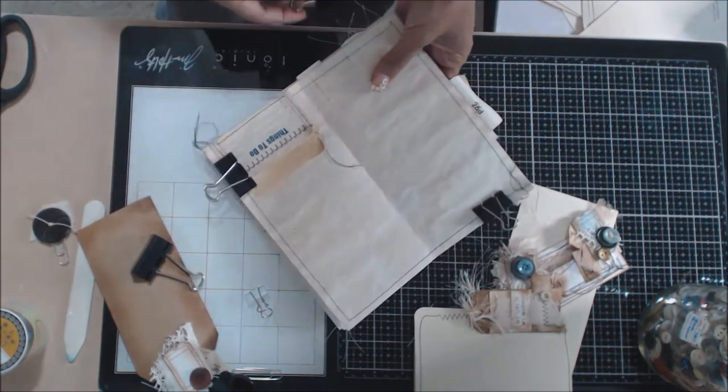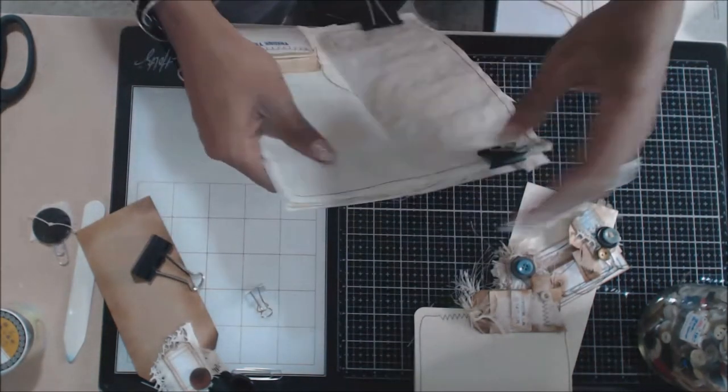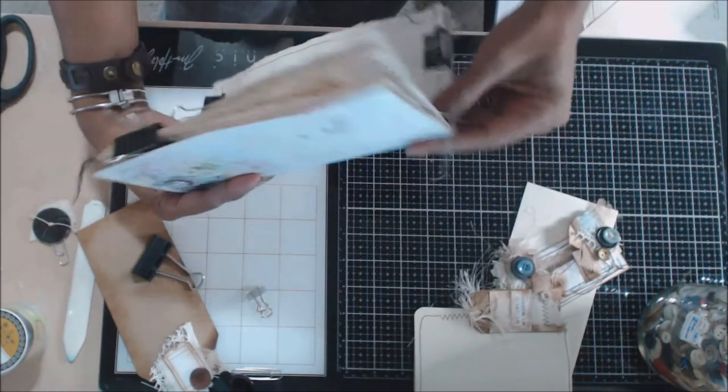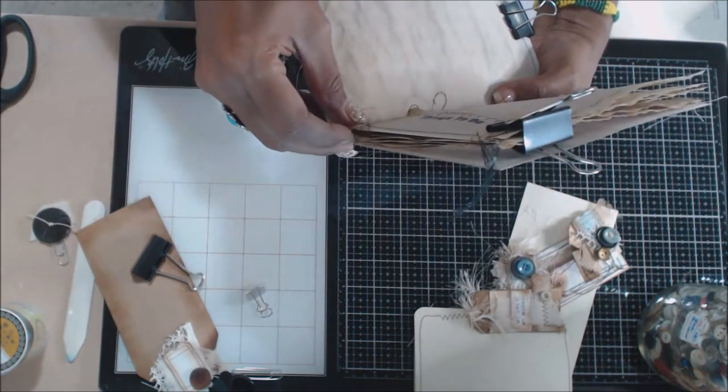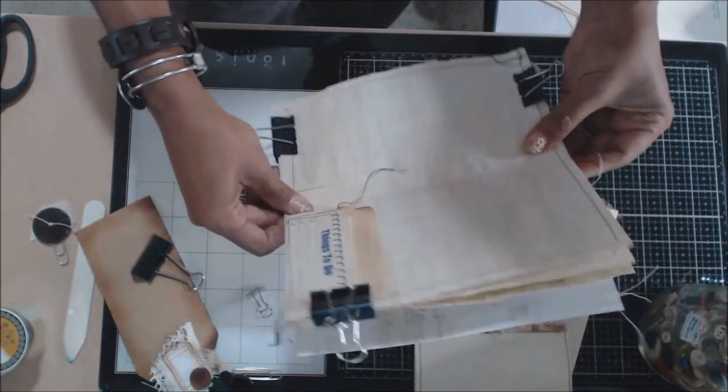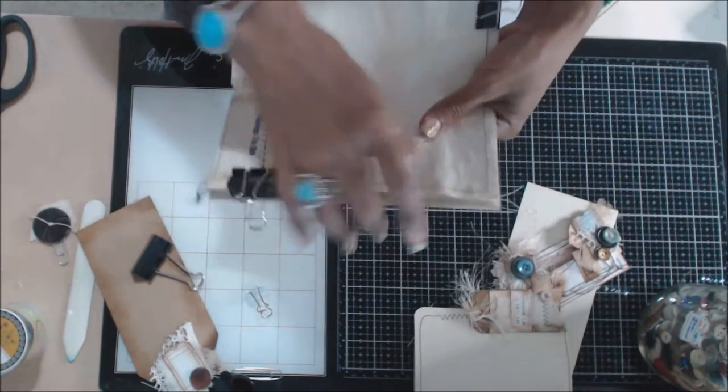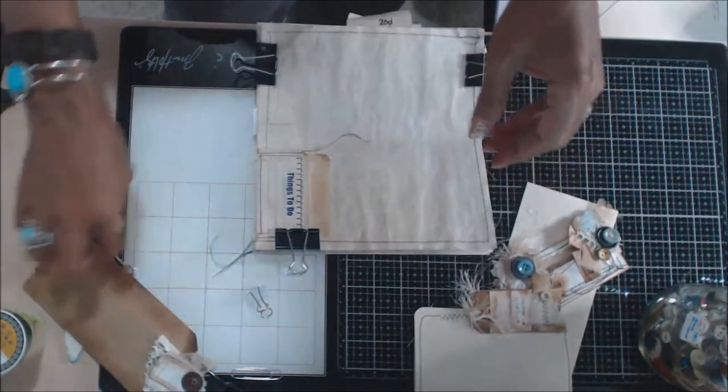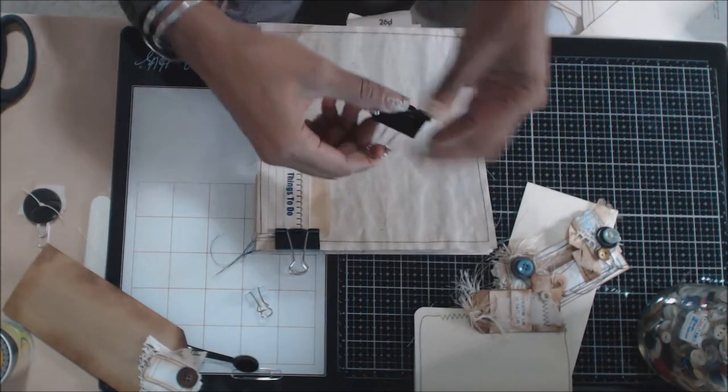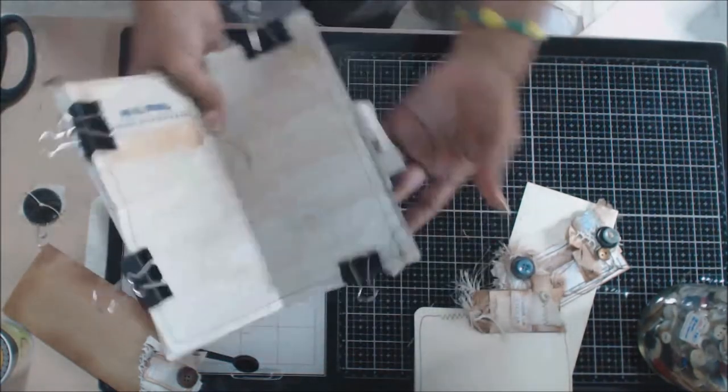Grab another binder clip. Now I like these Dollar Tree ones because they're pretty big, so they hold a lot of stuff. Clip it and make sure it's in the center, so the scoring needs to be right on to the center score of your cover piece.